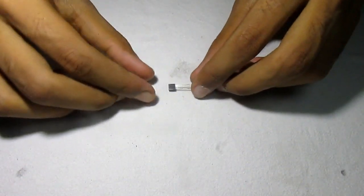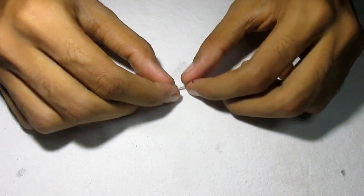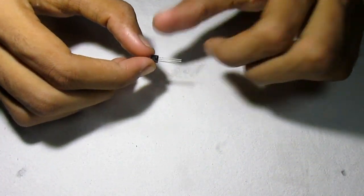Next up, we need a UM66 musical IC, also known as a melody generator, which although looks like a transistor but actually is an IC.